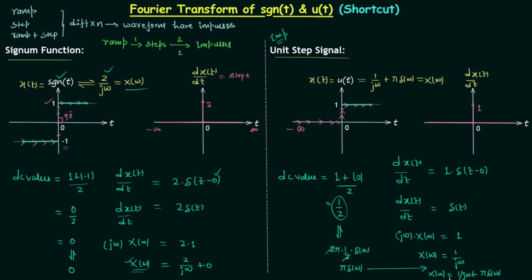When we take the derivative of x(t), any DC component becomes 0, so it is lost in the differentiated waveform. But the original signal may have a non-zero DC value. Therefore, always check the DC value first. If it is 0, there is no need to add anything. But if it is non-zero, calculate the Fourier transform of that DC value — which equals 2π·(DC value)·δ(ω) — and add it to the Fourier transform obtained after differentiation.